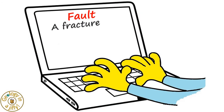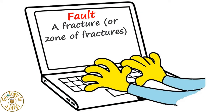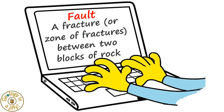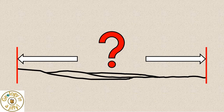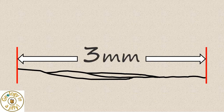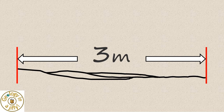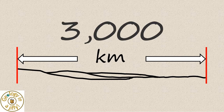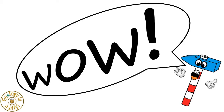A fault is a fracture, or zone of fractures, between two blocks of rock. Faults may range in length from a few millimetres, to a few metres, to kilometres, or even thousands of kilometres. Wow!